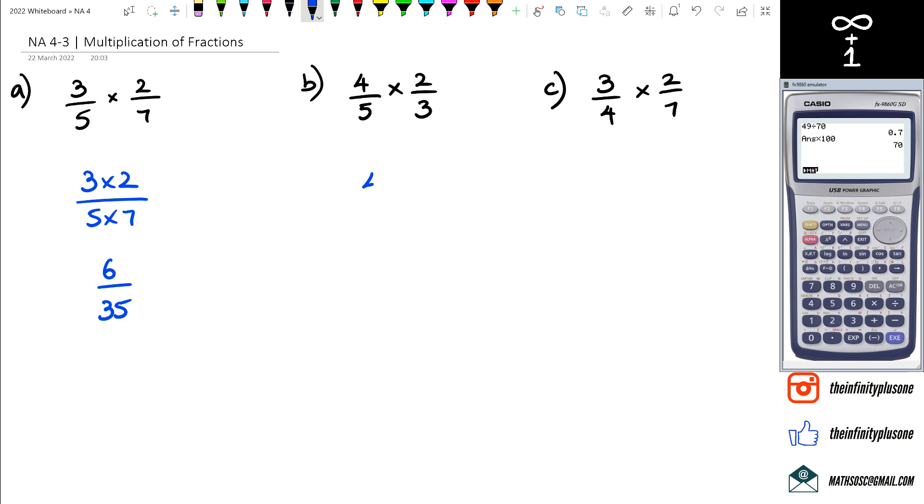So moving on to question b: four times two for the numerator, five times three for the denominator. Four times two is eight, five times three is 15, and we're pretty much done with question b.